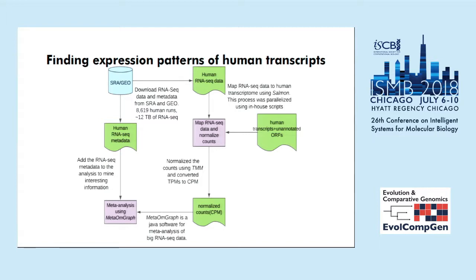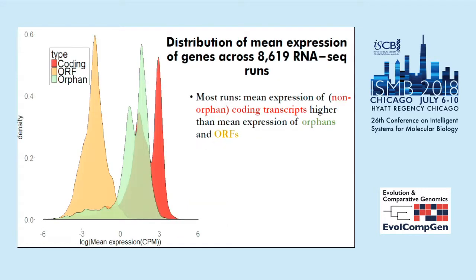Next I looked at the expression of these transcripts. I downloaded RNA-seq data from SRA along with metadata from SRA and GEO — around 12 terabytes of data across approximately 8,600 runs. I then mapped these runs to all known human transcripts using Salmon, as well as my 10,000 randomly selected unannotated ORFs. I normalized the data and analyzed it with the metadata using MetaOM graph, a Java software I am developing in my lab.